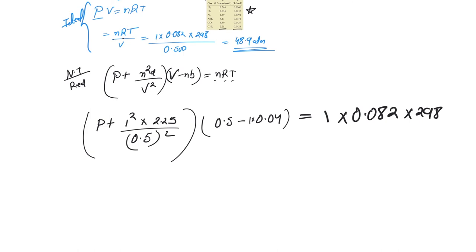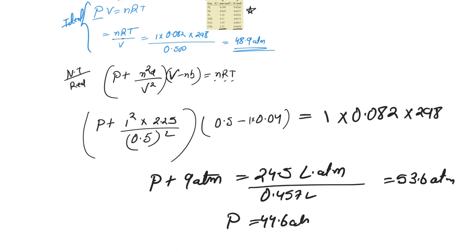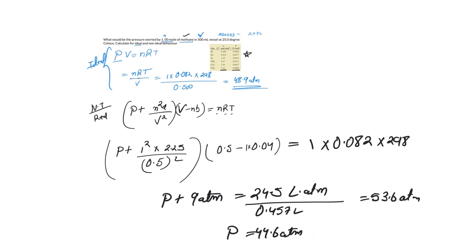So I'm going to do the calculation and write the answer straight away. That's P plus 9 atm is 24.5, that's actually the numerator, then 0.457 liters, and this is 53.6 atmosphere liters. So if you calculate for P, that comes about 44.6 atmospheric pressure. Now you see there's a reduction in the pressure exerted. Why? Because we understand that higher pressures tend to change the behavior of gases. Higher pressure introduces changes. I hope this really helps you to understand the real gas equation.